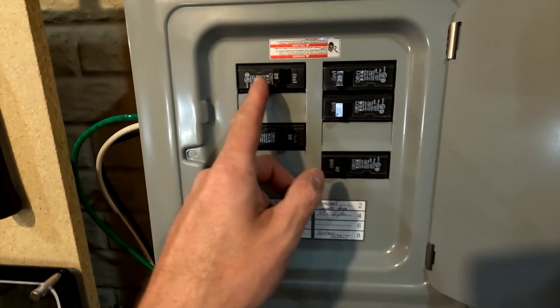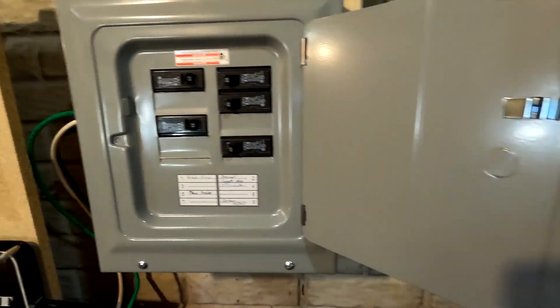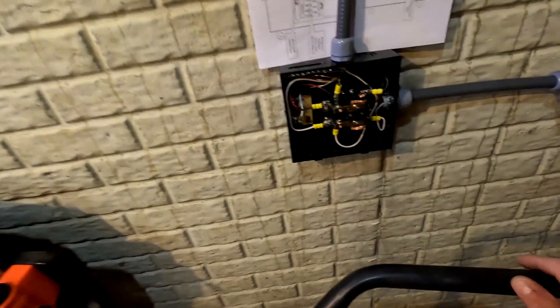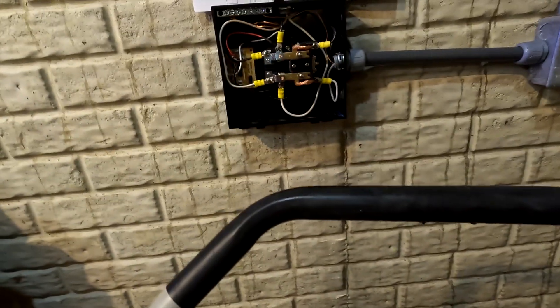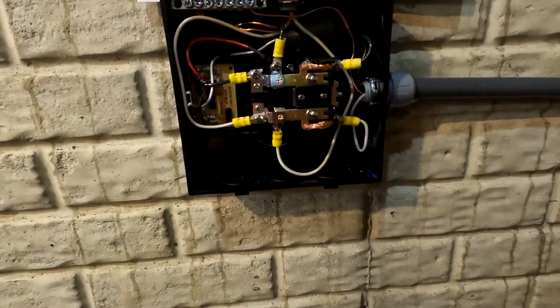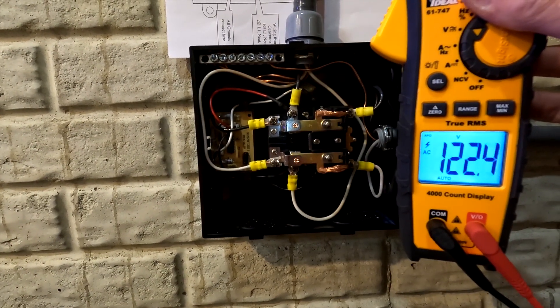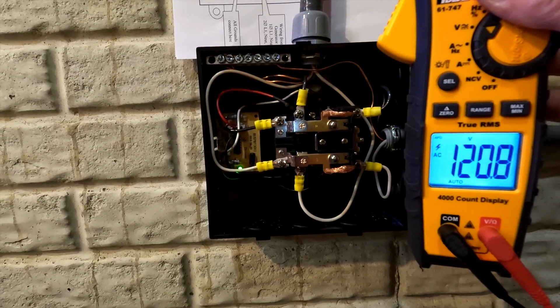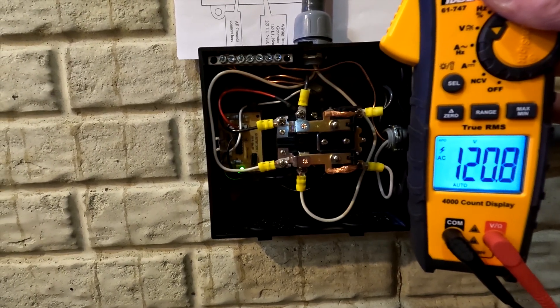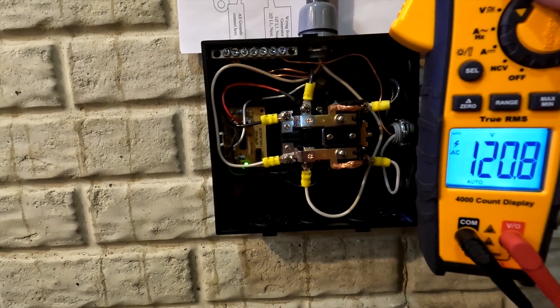I have it turned off on the panel right now, so it's using shore power at 122 volts. Let's go ahead and switch this on. It will take about 30 seconds for this thing to switch over. There it is. It just switched over and now it's using 120 volts from my off-grid system. Everything is working just fine.